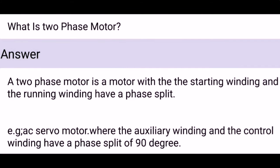What is a two-phase motor? A two-phase motor is a motor where the starting winding and the running winding have a phase split. For example, an AC servo motor, where the auxiliary winding and the control winding have a phase split of 90 degrees.